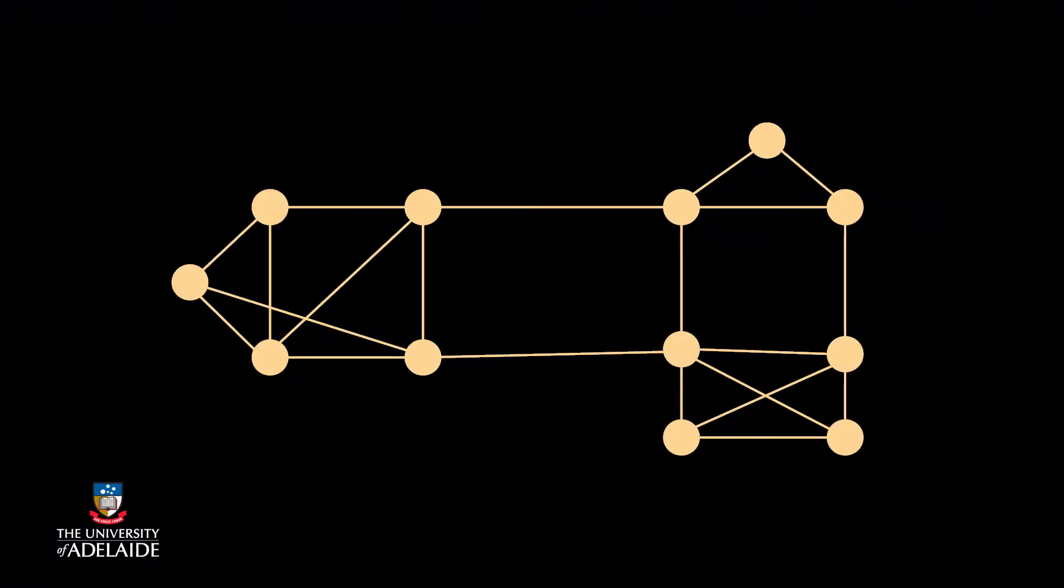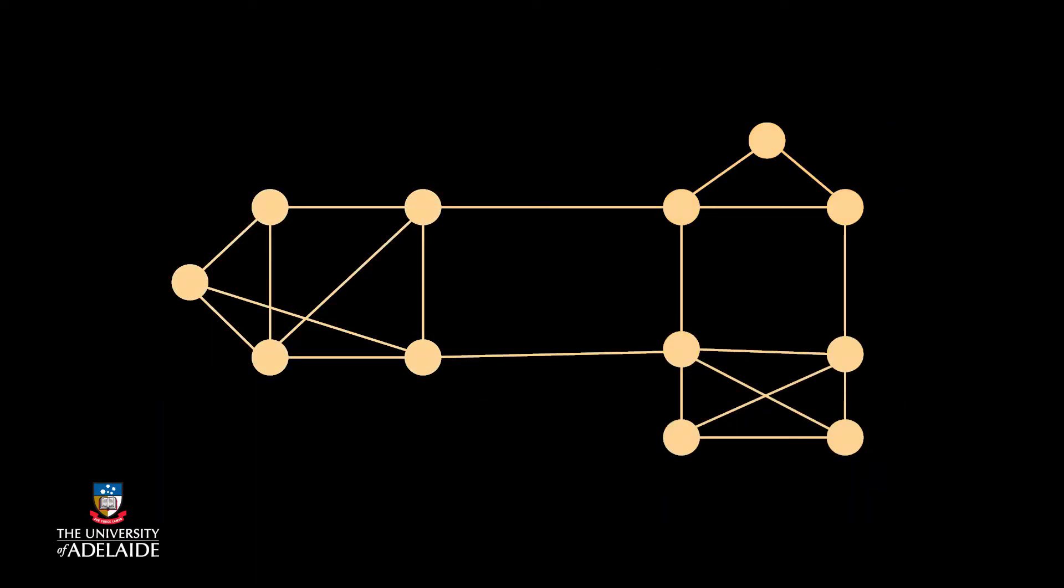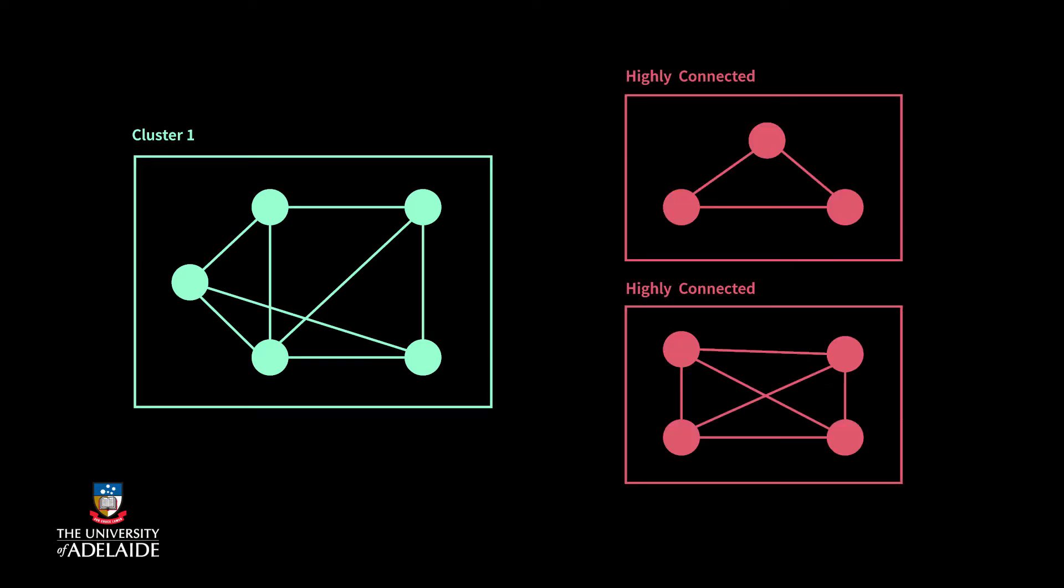The high-connected subgraph algorithm for clustering comes from this definition. It starts with the initial graph and calculates the minimum cut. If it isn't highly connected, it divides the graph into two subgraphs by deleting the edges of the minimum cut. The process is repeated for each subgraph. It returns high-connected subgraphs as clusters and divides others according to their minimum cut. It stops when all subgraphs become highly connected.